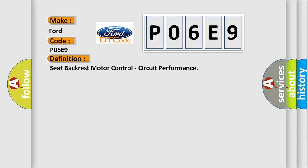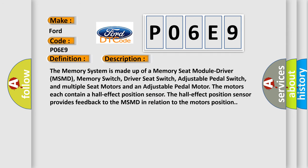Here is a short description of this DTC code. The memory system is made up of a memory seat module driver (MSMD), memory switch, driver seat switch, adjustable pedal switch, and multiple seat motors and an adjustable pedal motor. The motors each contain a hall effect position sensor. The hall effect position sensor provides feedback to the MSMD in relation to the motor's position.